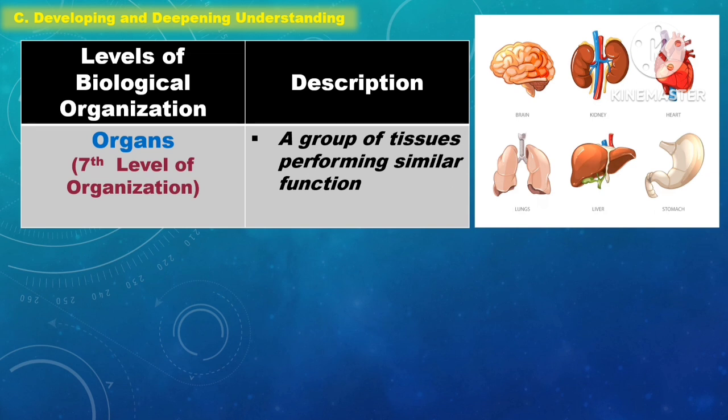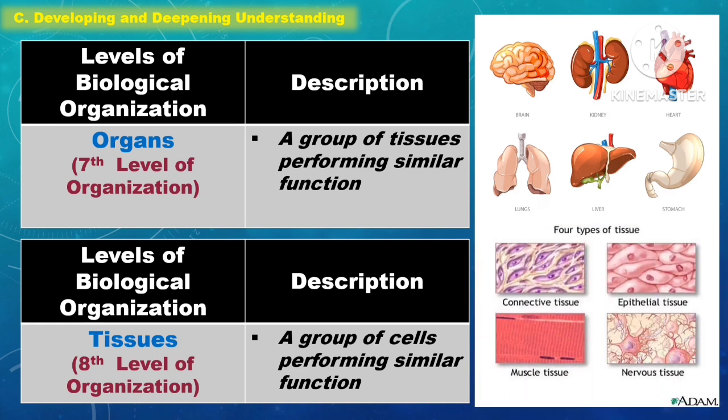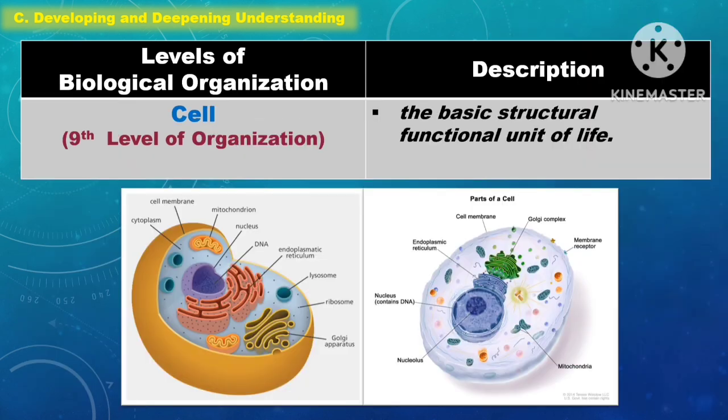The seventh level of biological organization is the organs — a group of tissues performing similar functions. The ninth level is the cell — the basic structural and functional unit of life.